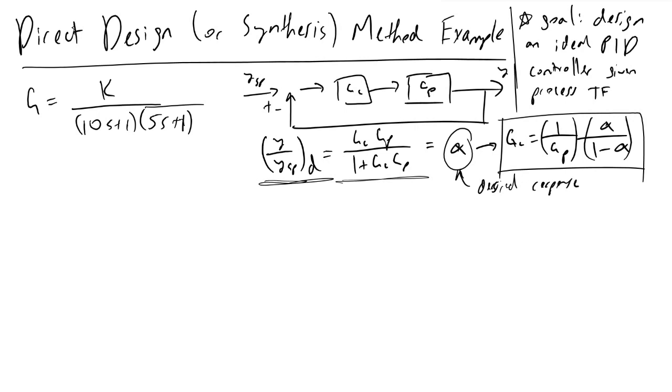And if we solve for gc times gp as a function of alpha, we get this, and alpha will equal 1 over lambda s plus 1, where this 1 means we have offset free tracking, which means when our system reaches the new steady state value, there won't be a gap or a difference between that new value and our setpoint, which is what we want.